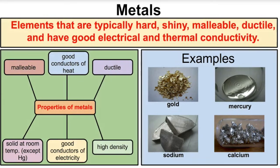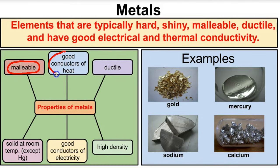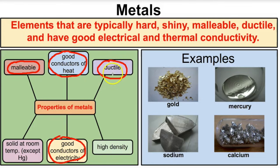Let's talk about metals first. Some physical properties of metals are that they're typically hard, shiny, malleable, ductile, and have good electric and thermal conductivity. Metals are malleable, meaning they can be hammered into thin sheets, like aluminum or gold. We know that metals are good conductors of heat and electricity. Metals also tend to be ductile — for example, copper can be drawn into wire, so ductility means you can make wires out of them.